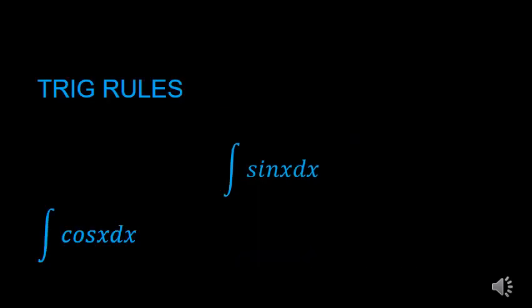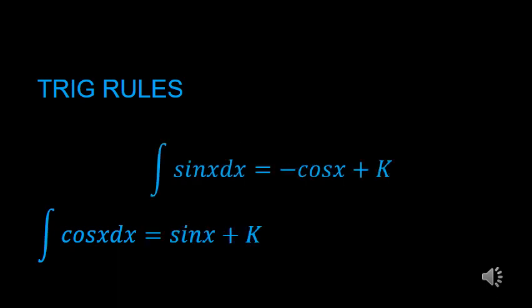Next, let's talk about the trig rules — how you do the antiderivative of sine or cosine. These are just going to be the opposites of what you already know. The antiderivative of sine x is negative cosine x + k, and the antiderivative of cosine x is sine x + k. The positives and negatives are the opposite of what they were with derivatives, because the derivative of sine was cosine and the derivative of cosine was negative sine — so you turn around where the negative is when you do the antiderivative.